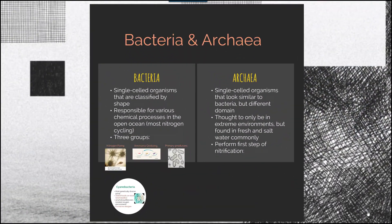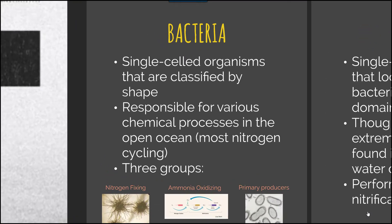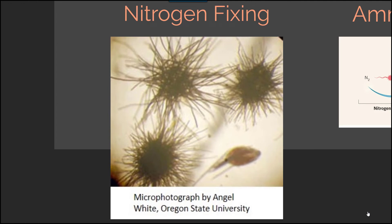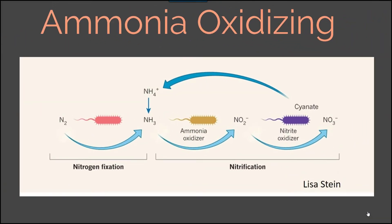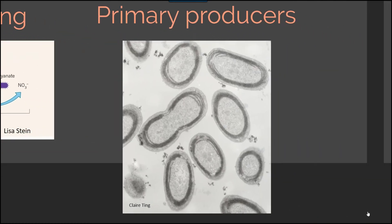Bacteria and archaea are two important groups as well. Bacteria consist of single-celled organisms classified by shape — we tend to see a circular structure or coccus, a rod structure or bacillus, or a spiral structure or spirochete. They are responsible for various chemical processes in the ocean, and there are three different groups: nitrogen-fixing bacteria, ammonia-oxidizing bacteria involved in nitrification through the oxidization of ammonia, and primary producers, which take energy from the sun and generate usable energy for cellular work such as ATP.